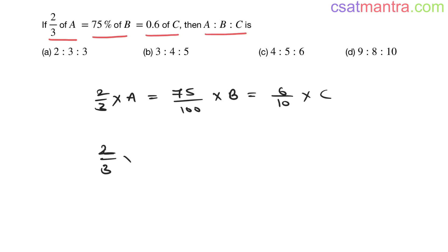Now let's simplify this further. 2/3 into A is 75, you can write it as 25/3. 100, 25/4 into B. 6, 2×3 is 10, 2×5 is 10 to C. 25, 25 gets cancelled. 2, 2 gets cancelled.